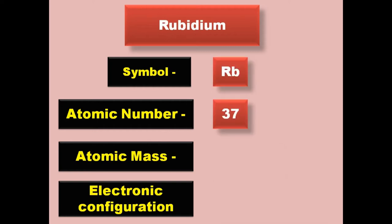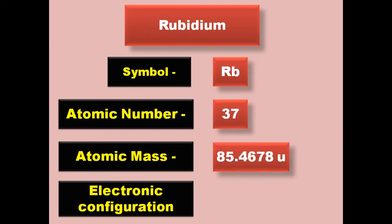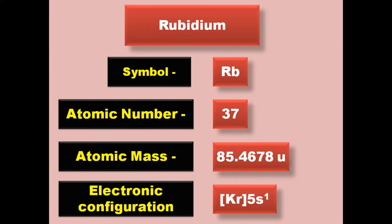Rubidium has symbol Rb, atomic number 37, atomic mass 85.4678, electronic configuration [Kr] 5s1. Rubidium is an alkaline metal and exists in solid form at room temperature.